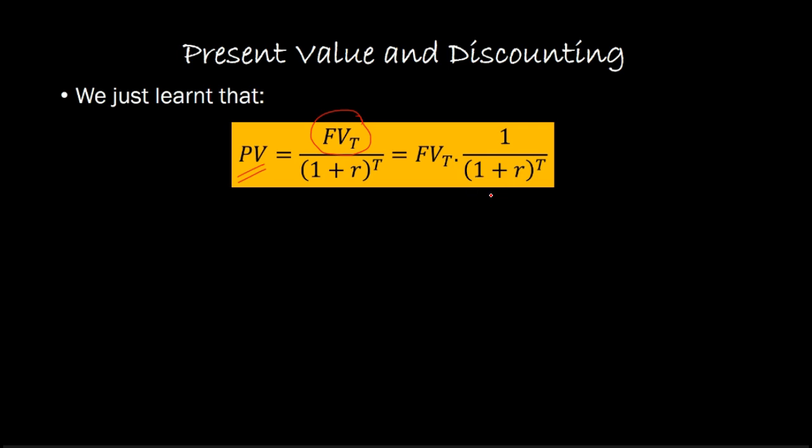This latter part of the equation is sometimes known as the present value interest factor, written as PVIF_r,T. The subscripts r and T suggest that for known values of r (our discount rate) and T (time period), we can get a numerical value for this factor. In other words, this expression is purely a function of r and T.